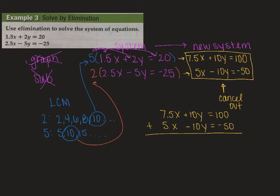So you add down. So I'm going to have 7.5x plus 5x. So that's going to become 12.5x. And then I have negative 10y and a positive 10y. They're going to cancel. And then I have 100 and negative 50. That's 50.